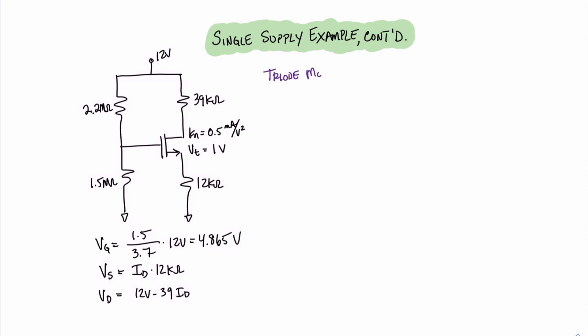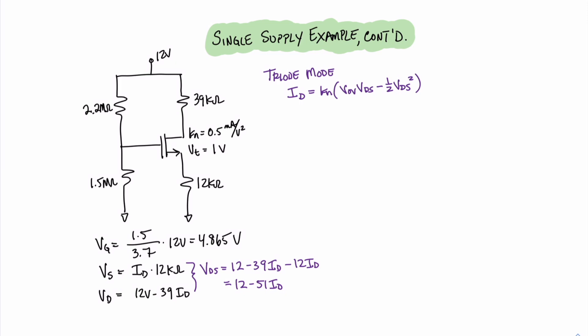Writing out the triode mode equation, we get ID equals KN times VOV times VDS minus 1/2 VDS², where KN equals 1.5. Since the triode mode equation is a function of VOV and VDS, let's write expressions for those two values. Starting with VDS: VDS equals 12 minus 39·ID minus 12·ID, which combines to 12 minus 51·ID. We can also write that VGS equals 4.865 minus 12·ID. Since the threshold voltage is 1 volt, we can write an expression for the overvoltage: VOV equals minus 12·ID plus 3.865.